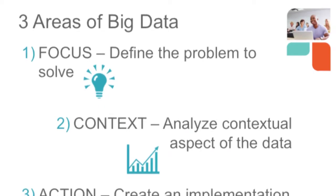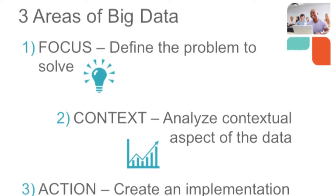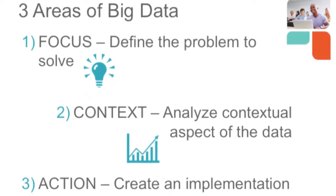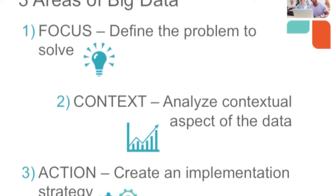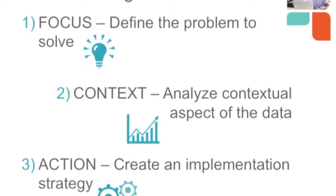If we look at Big Data and think of it in three primary areas: focus, context, and action. Focus is simply defining the problem we're trying to solve with Big Data. Context is making sure that the data we have, we understand at what point in time the contextual aspect of that data existed.